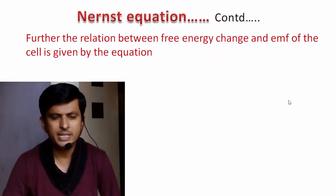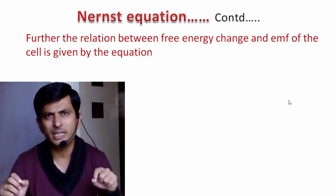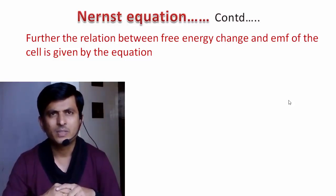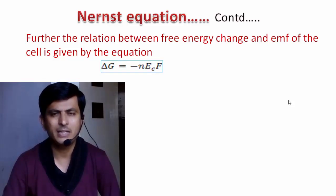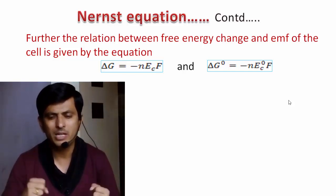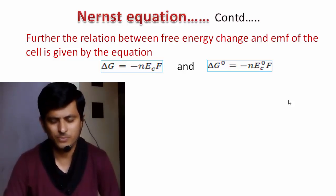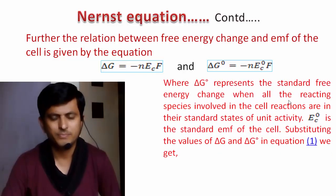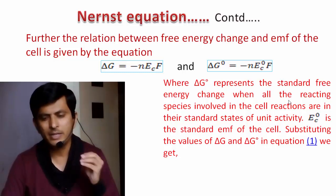The relationship between free energy change and the EMF of the cell is given by the fundamental equation: ΔG = −nECF. This equation is the bridge between thermodynamics and electrochemistry. Similarly, the standard form is ΔG⁰ = −nE⁰CF, where ΔG⁰ is the standard free energy change when all reacting species are in their standard states of unit activity, and E⁰C is the standard EMF of the cell.